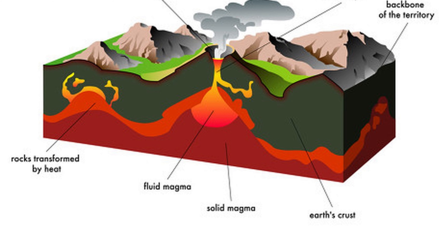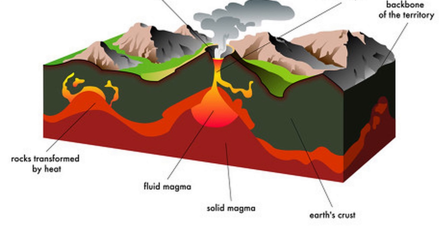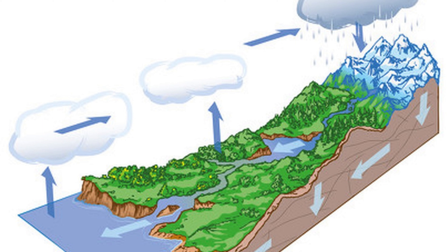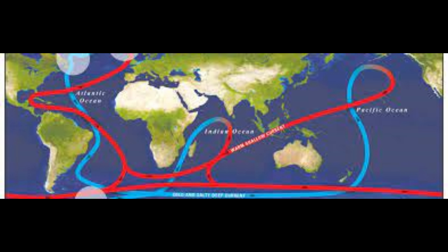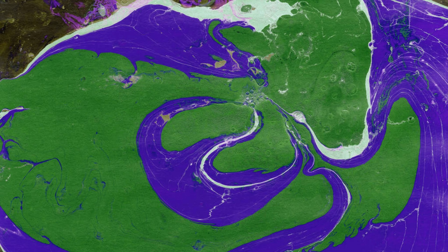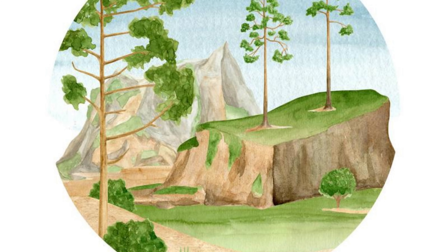The movement of tectonic plates can lead to the creation of mountain ranges. Mountains can influence climate by blocking the movement of air masses and causing rainfall on windward slopes. Ocean circulation, driven by differences in temperature and salinity, plays a vital role in global climate regulation — the Gulf Stream, for example, warms western Europe and influences its climate.